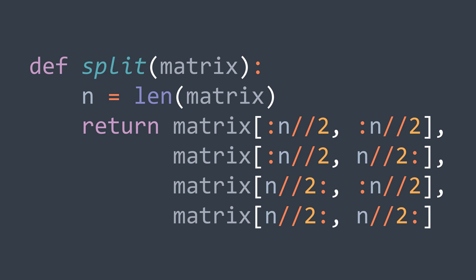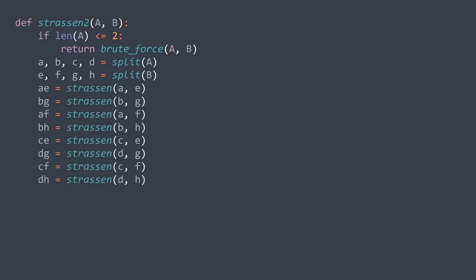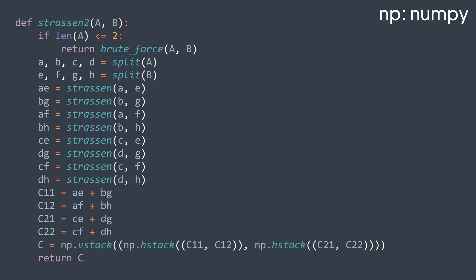And in the Strassen function, if the size is small enough, we can just use the brute force method. Else, we split the first matrix into four parts A, B, C, D, we split the second matrix into four parts E, F, G, H, then recursively, we'll calculate ae, bg, af, bh, ce, dg, cf, and dh. After it, c11 is ae plus bg, c12 is af plus bh, c21 is ce plus dg, and c22 is cf plus dh. Here we calculated the four parts of the product matrix. So we just join them into one matrix of size n and return it. It represents the product of our two initial matrices.